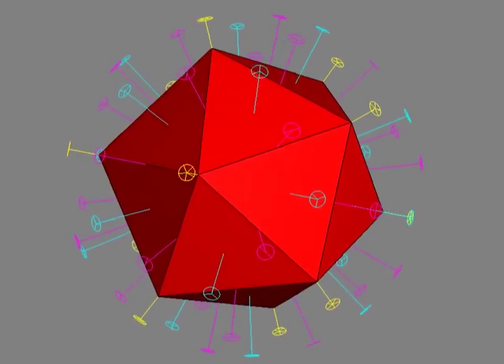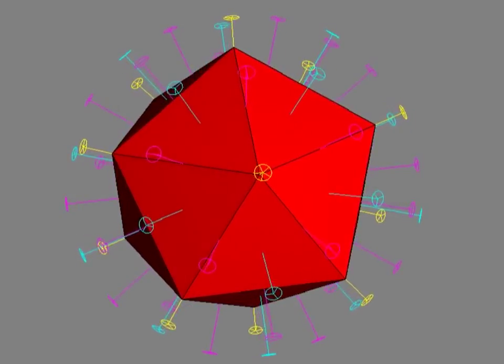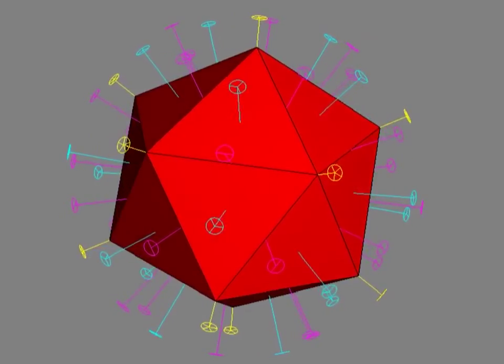Similarly, there are 10 3-fold axes, each connecting the center of one face to the opposite face. And there are also 15 2-fold axes, which connect an edge midpoint to the opposite edge midpoint.